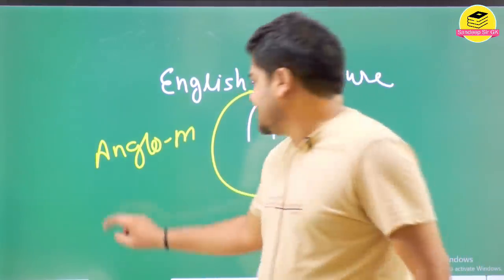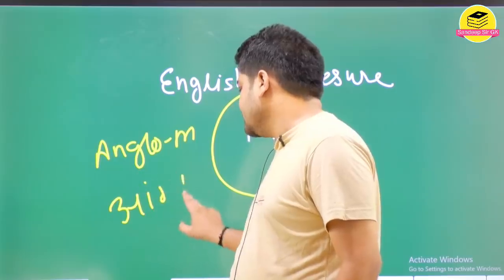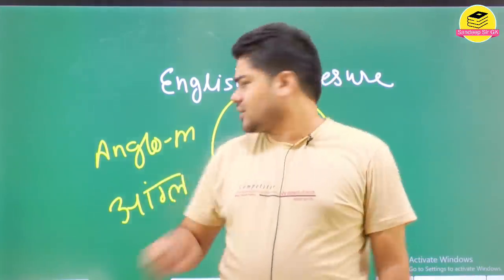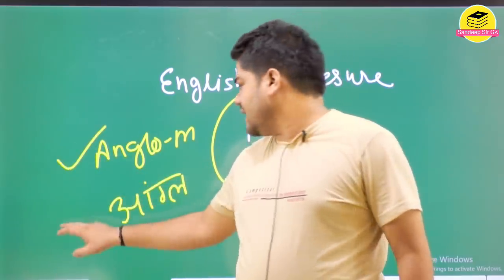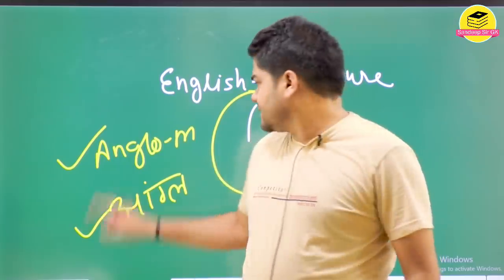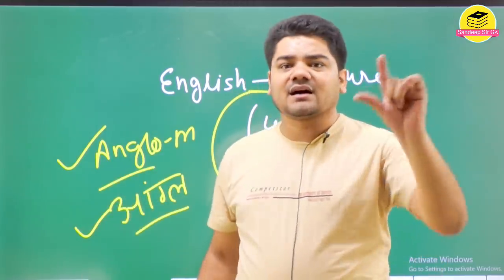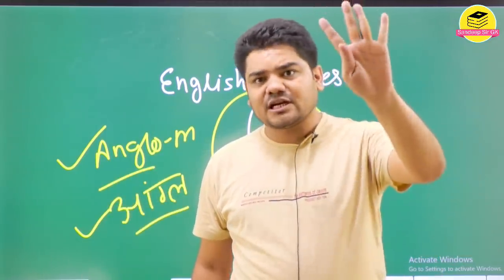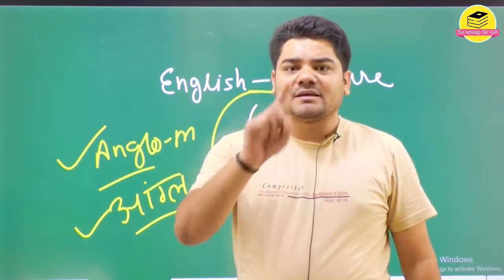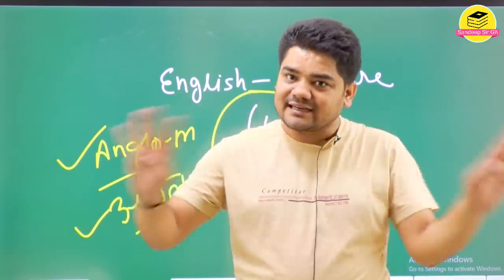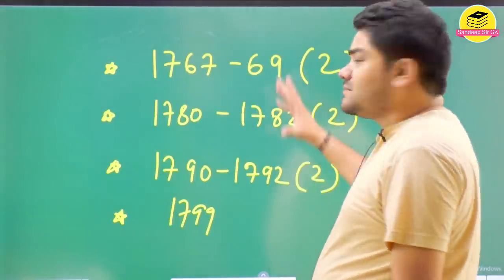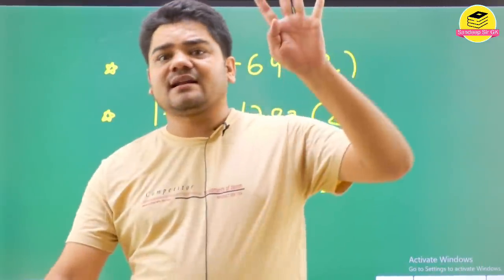Anglo-Mysore Battle in Hindi and English. Anglo-Mysore, there were four wars. In English they say first, second, third, fourth. In Hindi we say Pratham, Dwitiya, Tritiya, Chaturth. Anglo-Mysore Battle 1, 2, 3, 4, that's all clear. Now let's see when these four wars happened.